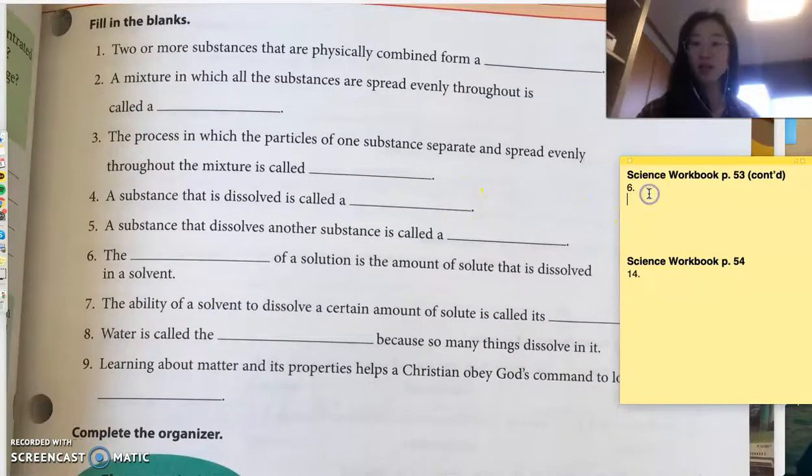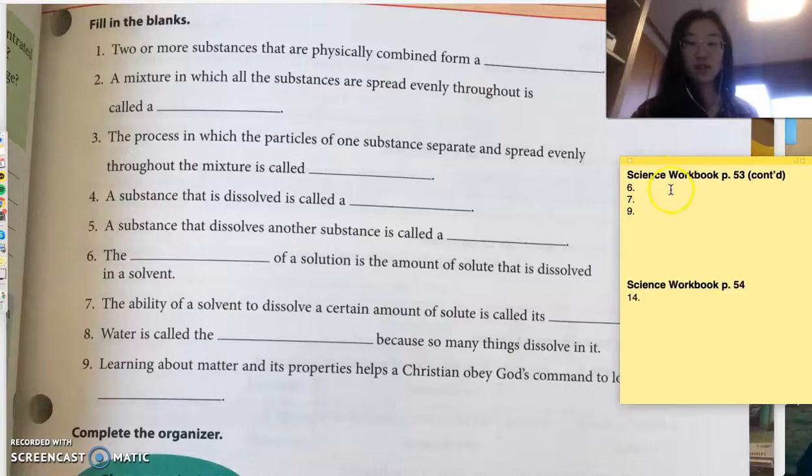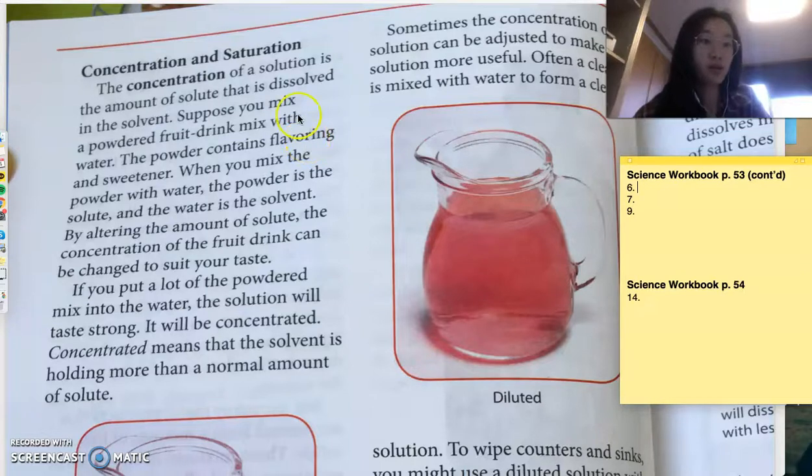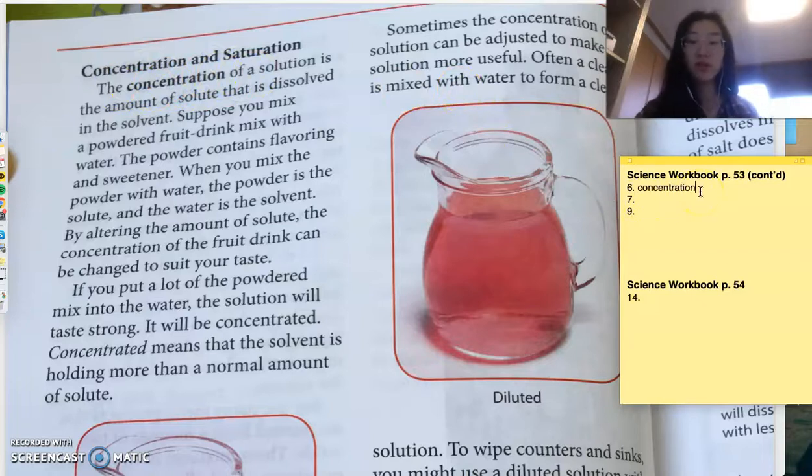If you remember, we actually skipped numbers 6, 7, and 9. So let's do those first. Number 6. The blank of a solution is the amount of solute that is dissolved in a solvent. So, the amount of solute, how much sugar or how much powdered flavor or how much salt we put inside water. That is the concentration of a solution. So, if you wrote that down, you are correct. Great job.